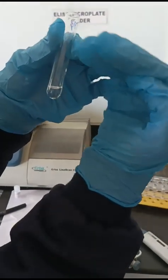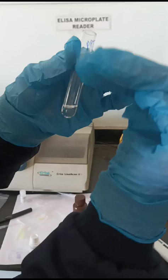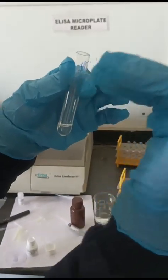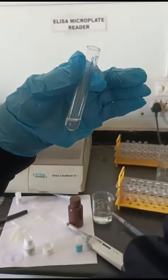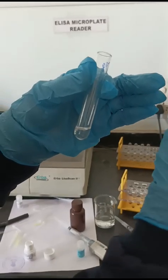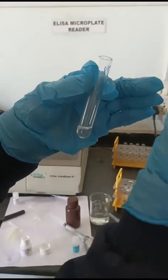We will be using the supernatant part which contains only the HDL. That will be used as a sample to proceed with the test using the instrument. Follow the steps, press test number 21, then blank, standard, sample. It will be the same thing.